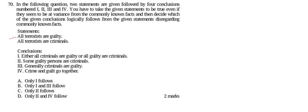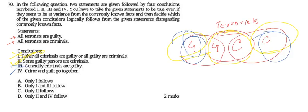Question 70: two statements are given followed by four conclusions. You must take the given statements as true even if they seem at variance with commonly known facts, then decide which conclusions logically follow. Statements: all terrorists are guilty; all terrorists are criminal. Drawing the Venn diagram, these two sets are different and cannot overlap in the way statement 4 suggests, so only conclusion 2 is correct.